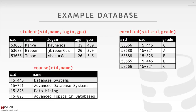For today's examples, we're going to use a database modeling a really simple college. We have three tables: students, courses, and then students can be enrolled in courses. There's a foreign key reference from the student ID and the course ID. This will be our running example.